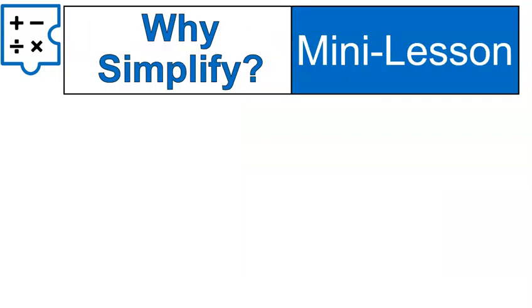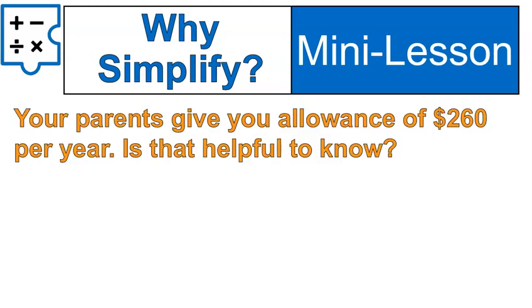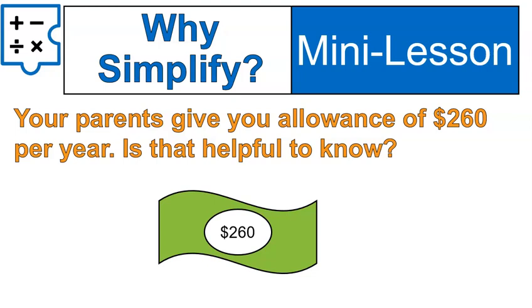Before we get into the math of this, I want to explain to you why we simplify and show you what simplifying looks like. We simplify to make things more accessible or easy for us to understand. For example, if your parents give you an allowance of $260 per year, that might not be a helpful number for you to know. Why is $260 a year? How much is that? I don't understand.